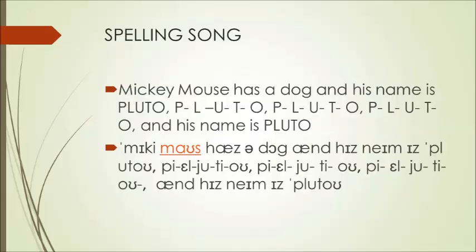Now let's listen to a song to spell the name of Pluto. Mickey Mouse has a dog, and his name is Pluto. P, L, U, T, O. P, L, U, T, O, and his name is Pluto.